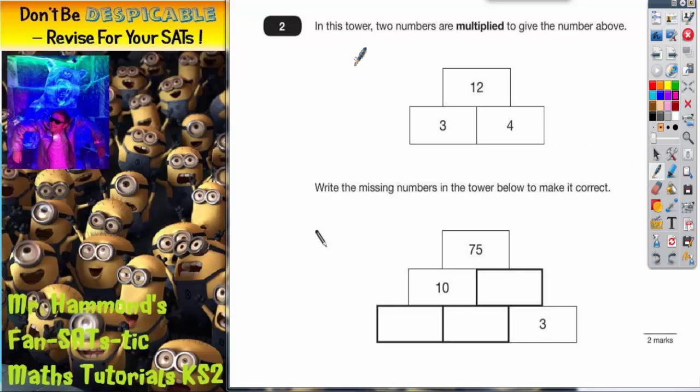Question 2. In this tower, two numbers are multiplied to give the number above. In this example, we've got 3 times 4 gives us 12.